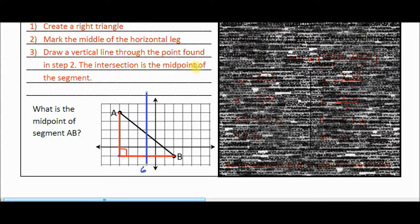Step three says the intersection is the midpoint of the segment. When it says intersection, that means the intersection with our line segment AB. And here's our intersection right here. Let's mark that. I'll change colors here. Here is our intersection. Right there is the exact midpoint of segment AB.